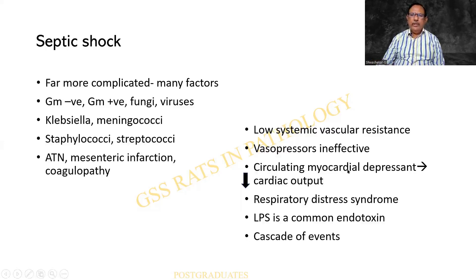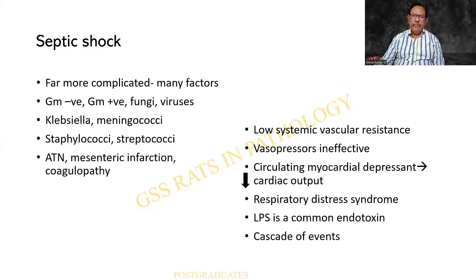Normally in shock, the heart and the brain will be getting the blood supply. But in septic shock, there is a myocardial depressant as well, decreasing blood supply to the heart. There is a decreased cardiac output because of the depressant. Other changes can be respiratory distress, and lipopolysaccharide is a common endotoxin that has been implicated. The cascade of events we shall be seeing again.